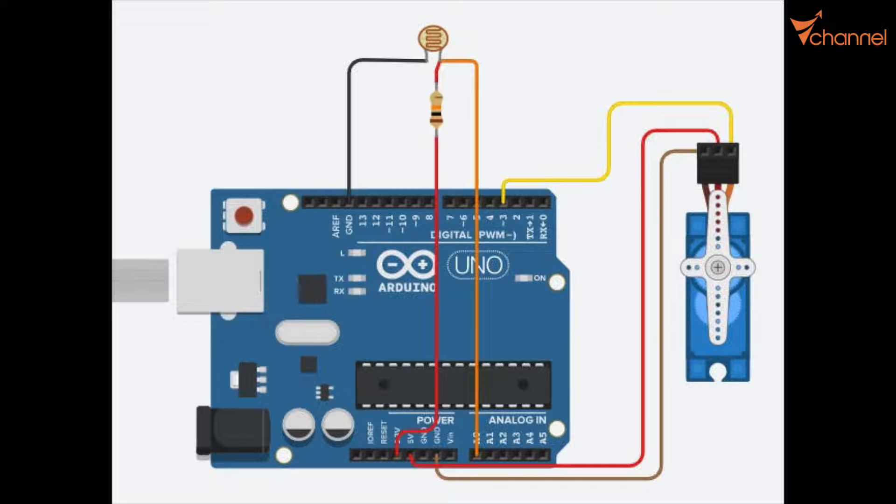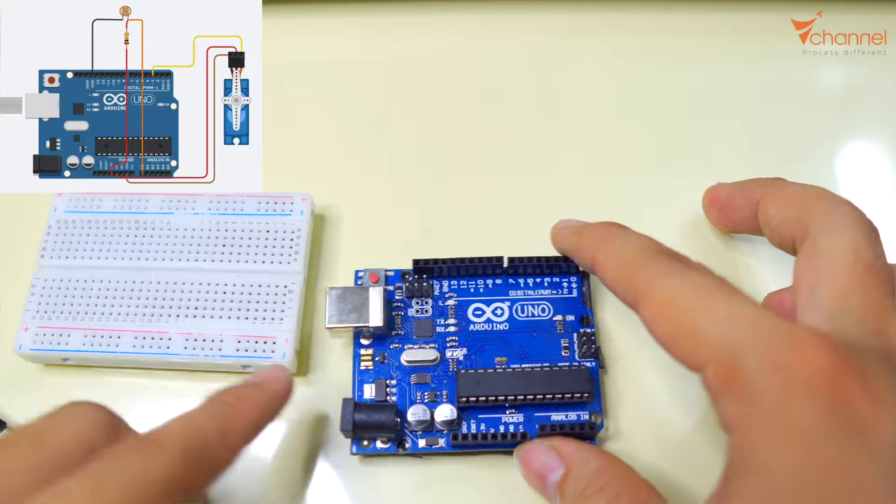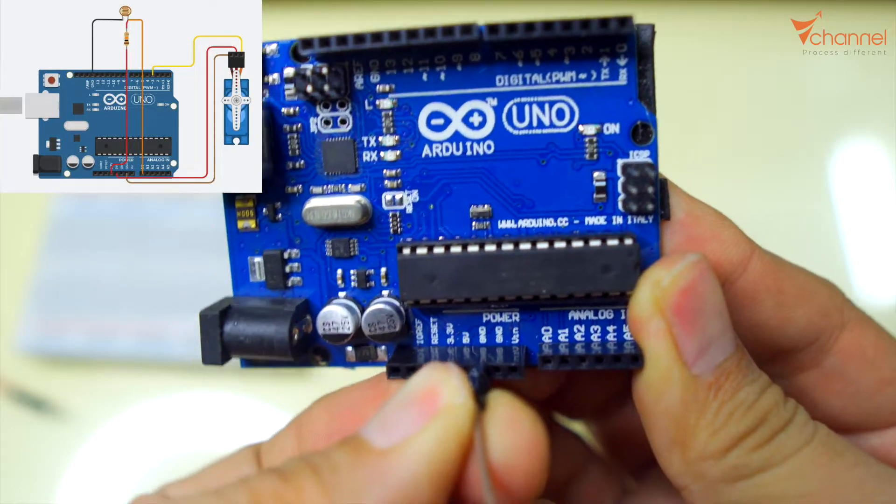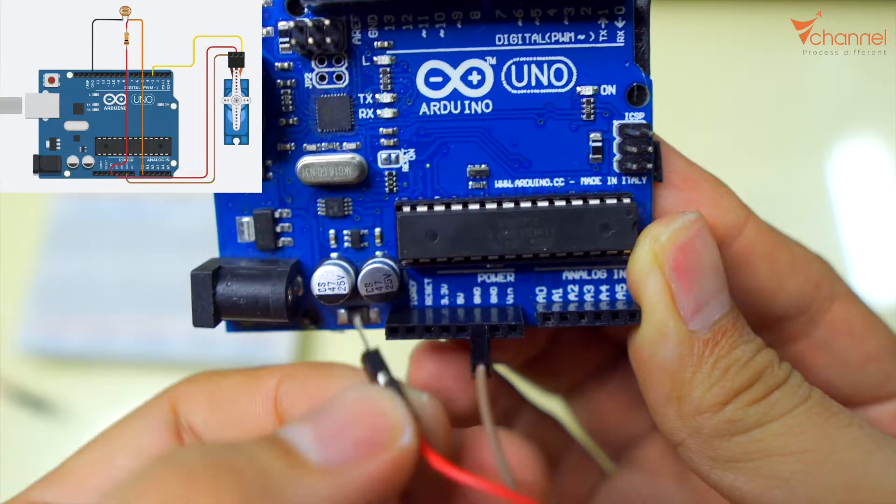Okay, now connect. The circuit board diagram I have given in the description. First, we need the power for servo. One ground and one 5V.